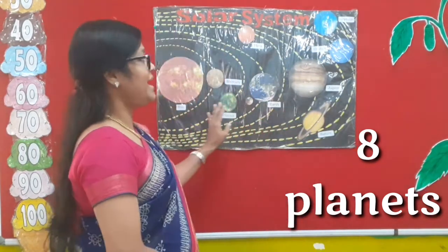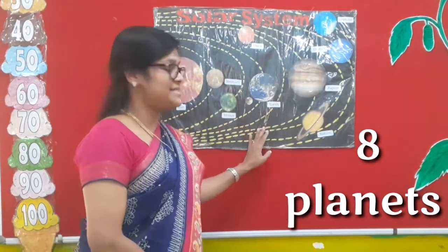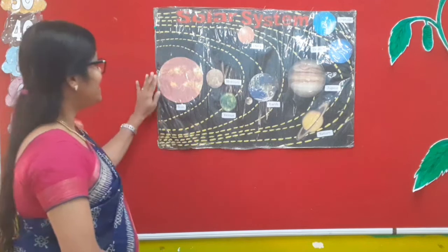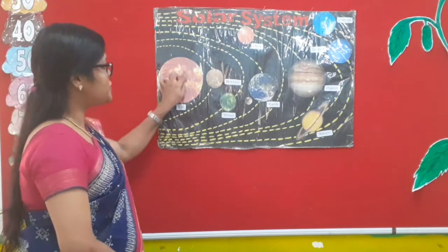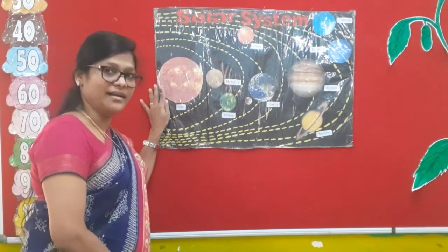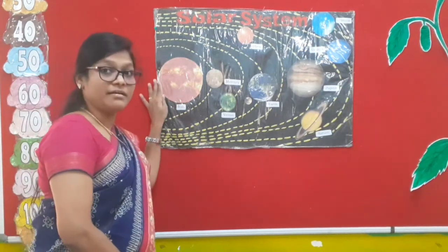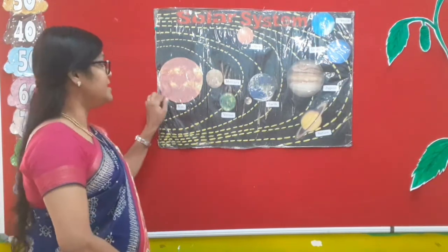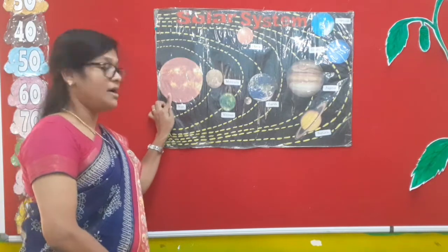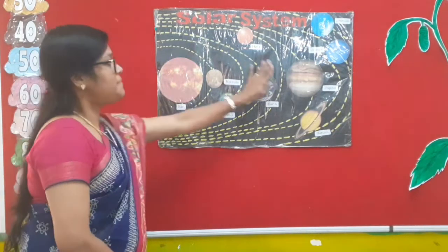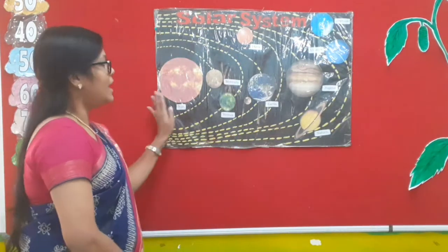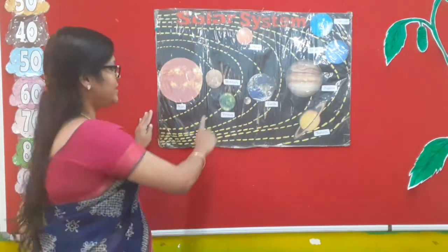You are right, children! There are eight planets in the solar system. Come on, let's identify the eight planets. This is the picture of the Sun. The Sun is a star, and all these planets are with the Sun.